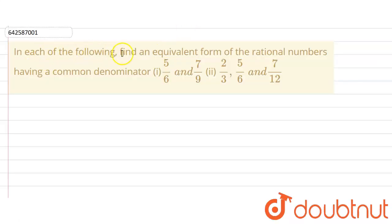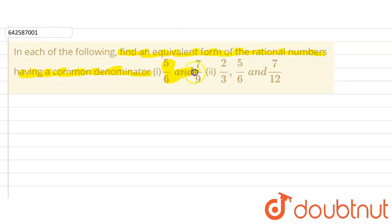Hello everyone. The question is: in each of the following, find an equivalent form of the rational numbers having a common denominator. Part one is five upon six and seven upon nine. Part two is two upon three, five upon six, and seven upon twelve.